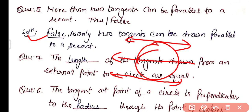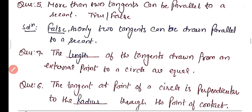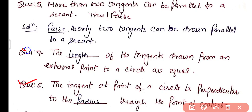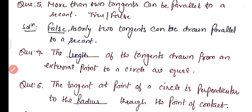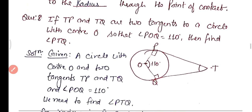Question number six is a fill-in-the-blank: the tangent at a point of a circle is perpendicular to the radius through the point of contact. The answer is 'radius'. Question number seven: the blank of tangents drawn from an external point to a circle are equal. The answer is 'lengths' — the lengths of tangents drawn from an exterior point to a circle are equal.